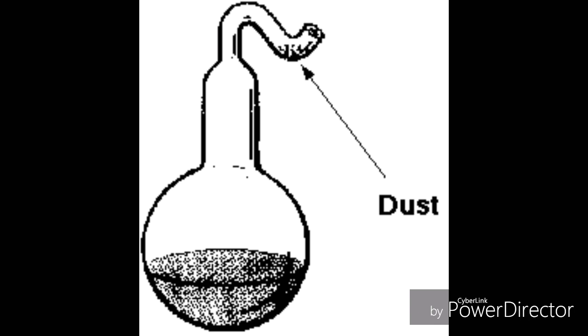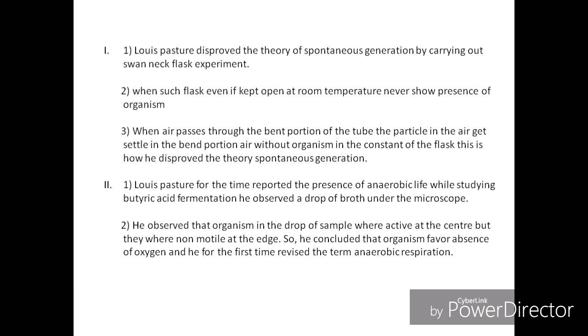When air is passed through the bent portion of the tube, the particles in the air get settled in the bent portion. Air without organisms is in contact with the contents of the flask. This is how he disproved the theory of spontaneous generation.